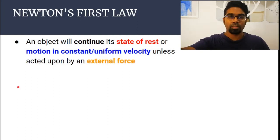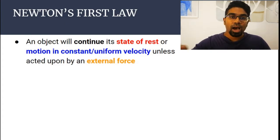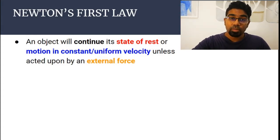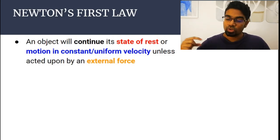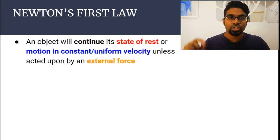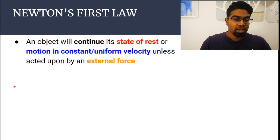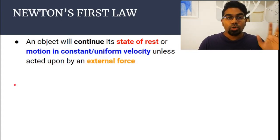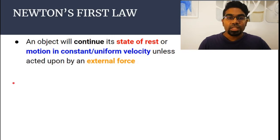If an object is already moving — so let's say we roll a marble — the marble will continue moving and will not stop unless acted upon by an external force, meaning either you stop the marble or friction from the surface causes it to stop. That is what external force means. So Newton's first law states that an object will continue its state of motion unless acted upon by an external force, and this is what will explain inertia.